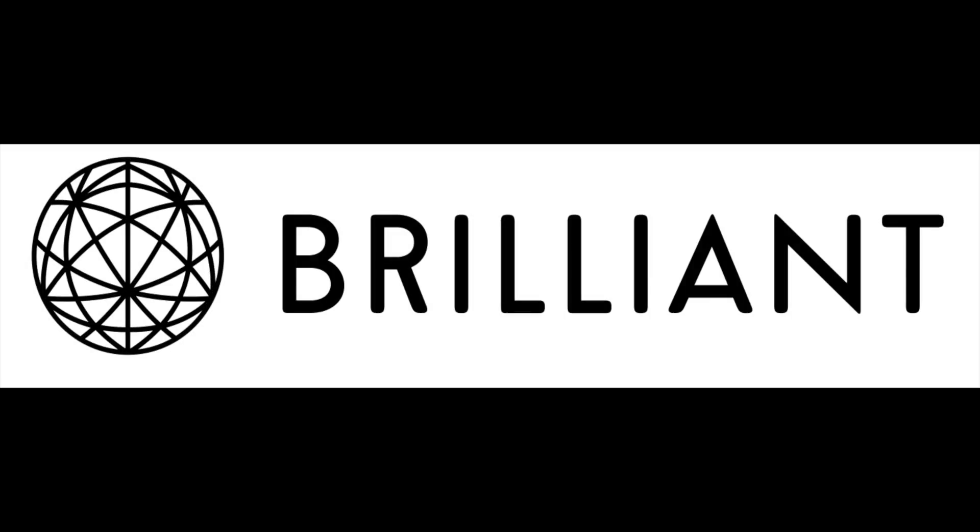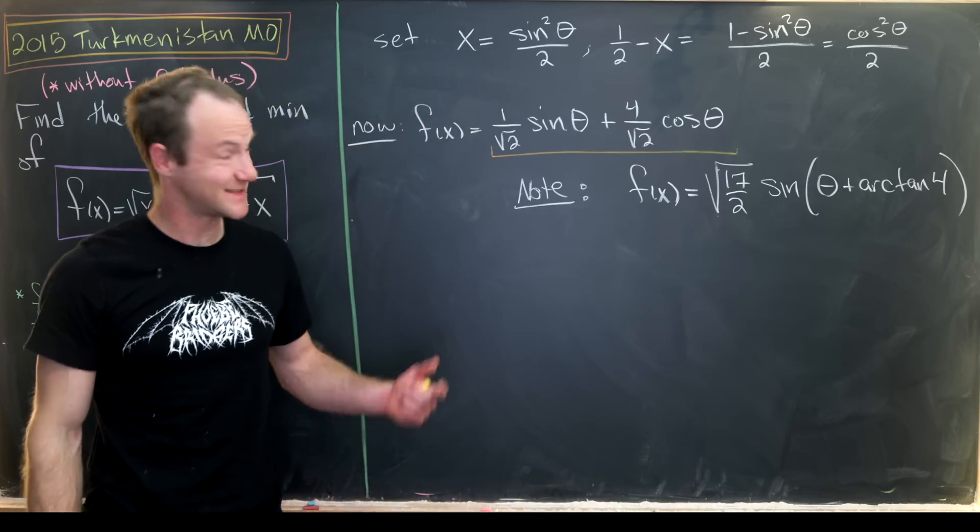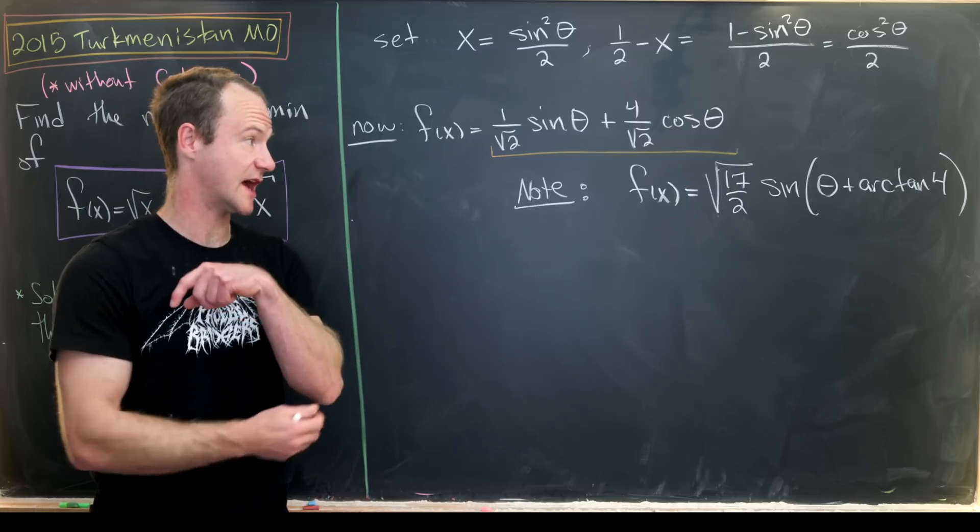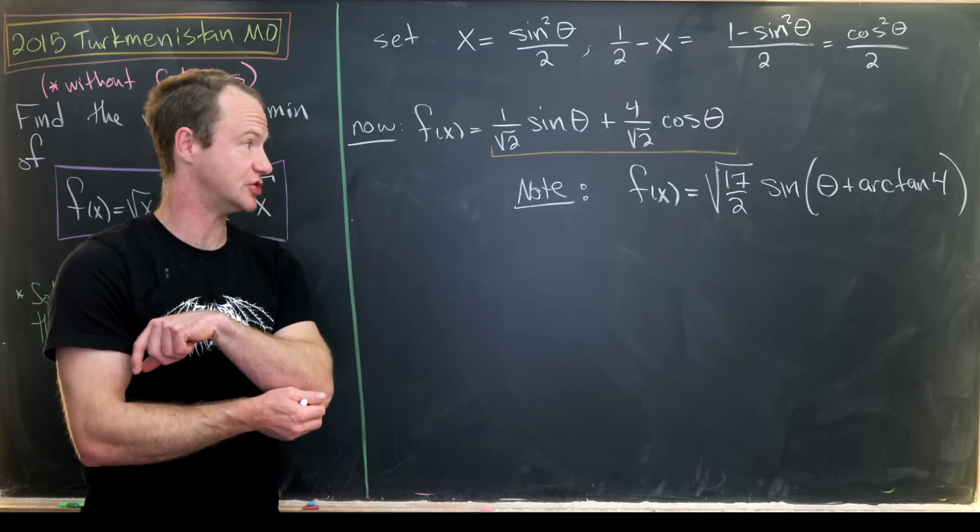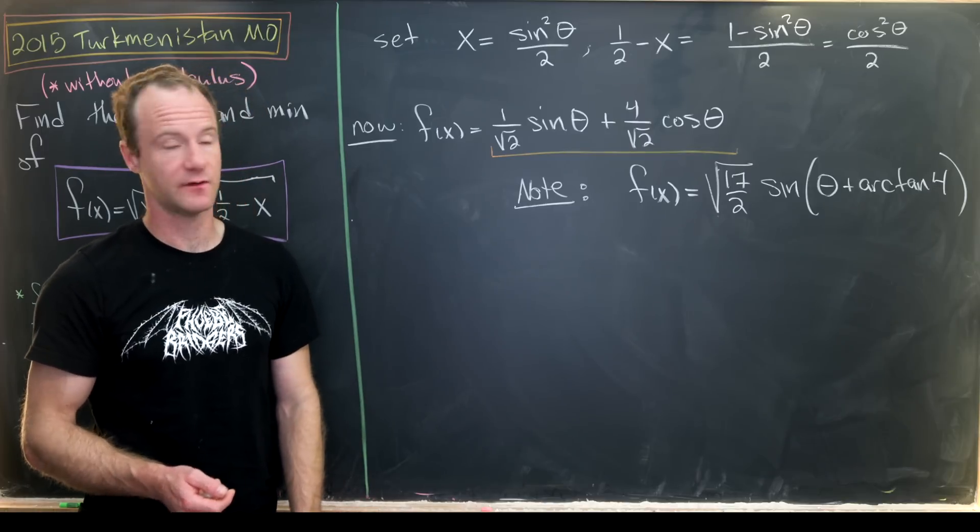And one more time, I'd like to thank Brilliant for sponsoring today's video. Okay, so there we've got it. Now our function has this kind of neat structure as the square root of 17 over 2 times the sine of theta plus the arctan of 4.